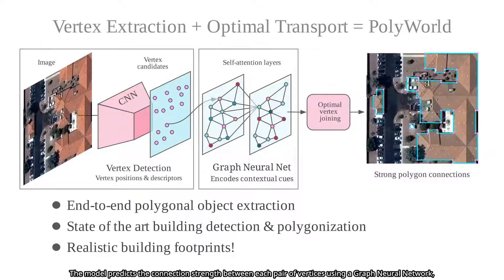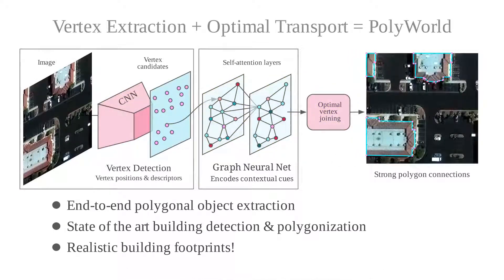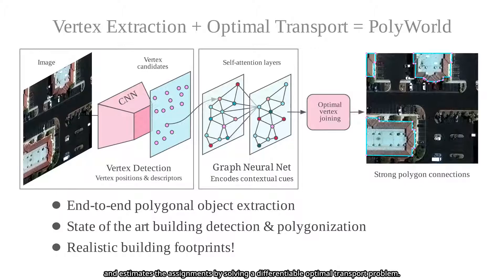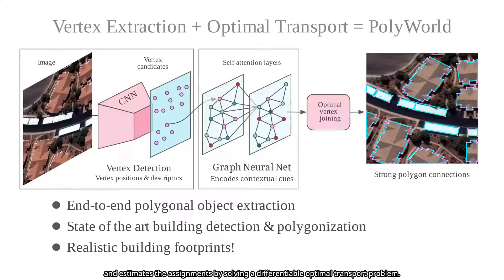The model predicts the connection strength between each pair of vertices using a graph neural network and estimates the assignments by solving a differentiable optimal transport problem.